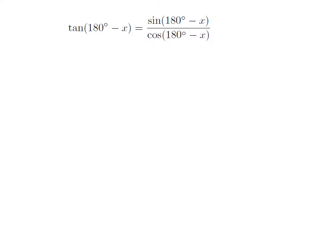So tangent of 180 degrees minus x is equal to sine of 180 degrees minus x divided by cosine of 180 degrees minus x.